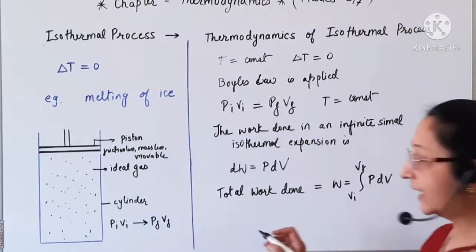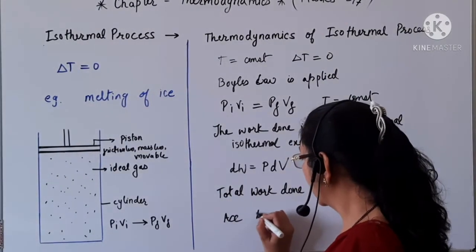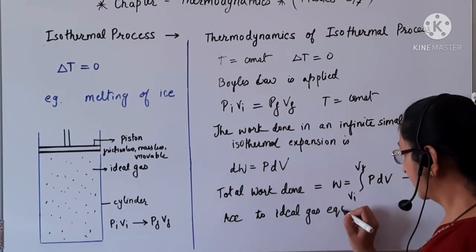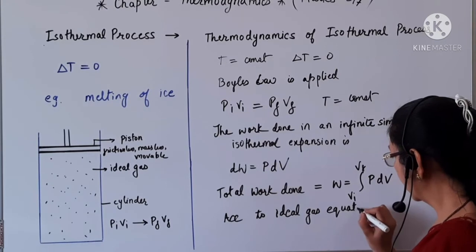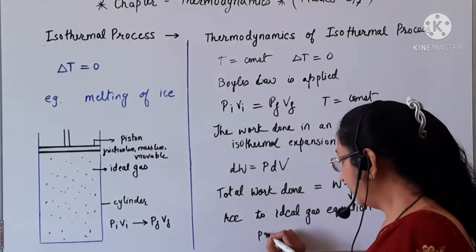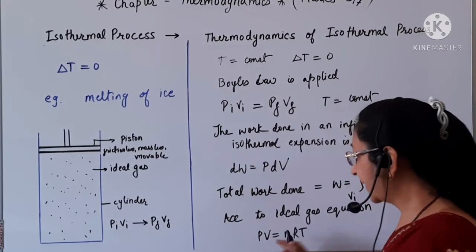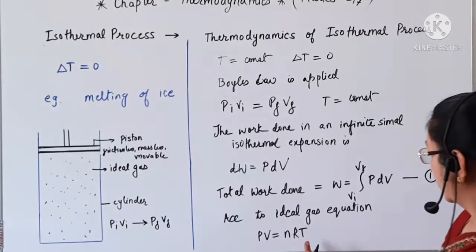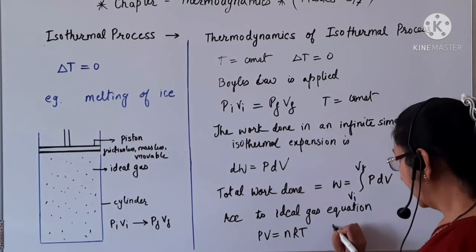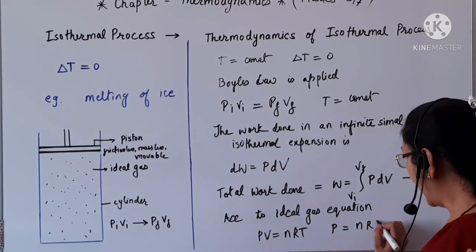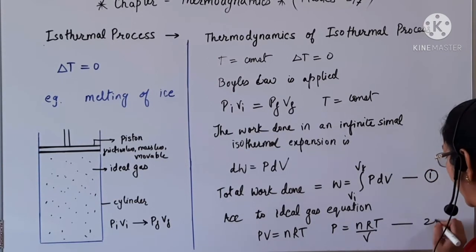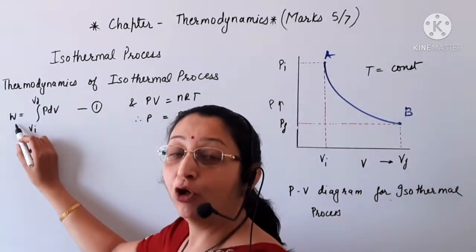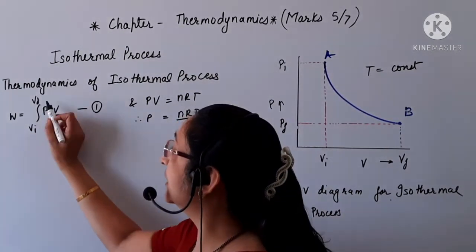Now for an ideal gas, according to the ideal gas equation, we know that pV is equal to nRT, where p is pressure, V is volume, n is the number of moles, R is the universal gas constant, and T is the temperature. So we can write p as nRT upon V. Let this be equation number 2.